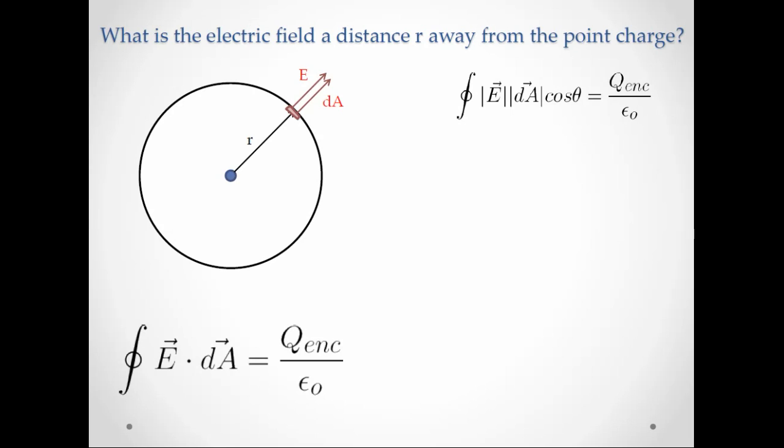So let's expand that a little bit more. So I'm going to draw in a tiny little bit of area dA. Now dA has an area vector that points normal to the surface. Why? That's the convention. We always say for a closed surface, the area vector is normal to the surface.